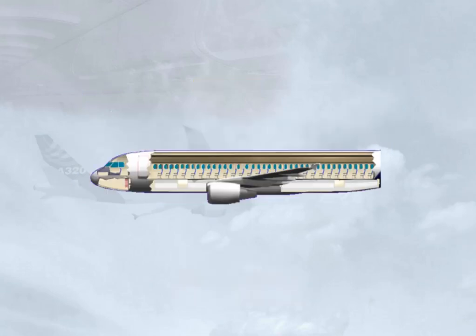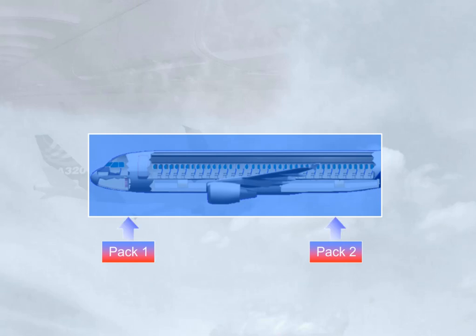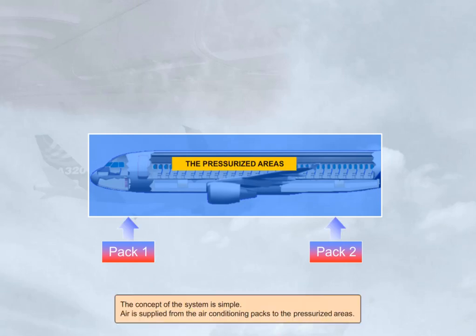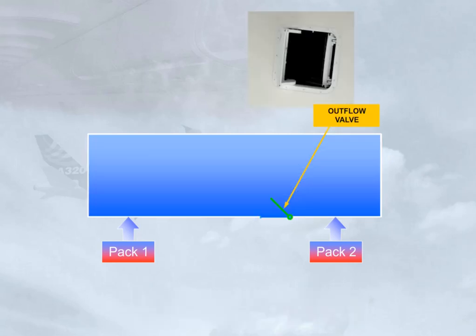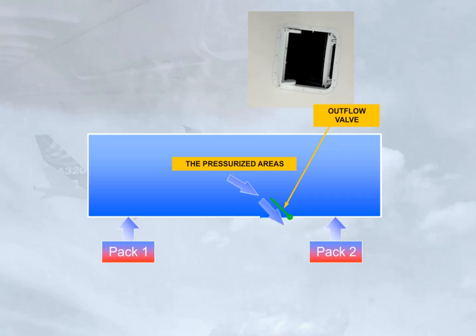The concept of the system is simple. Air is supplied from the air conditioning packs to the pressurized areas. An outflow valve is used to regulate the amount of air allowed to escape from the pressurized areas.